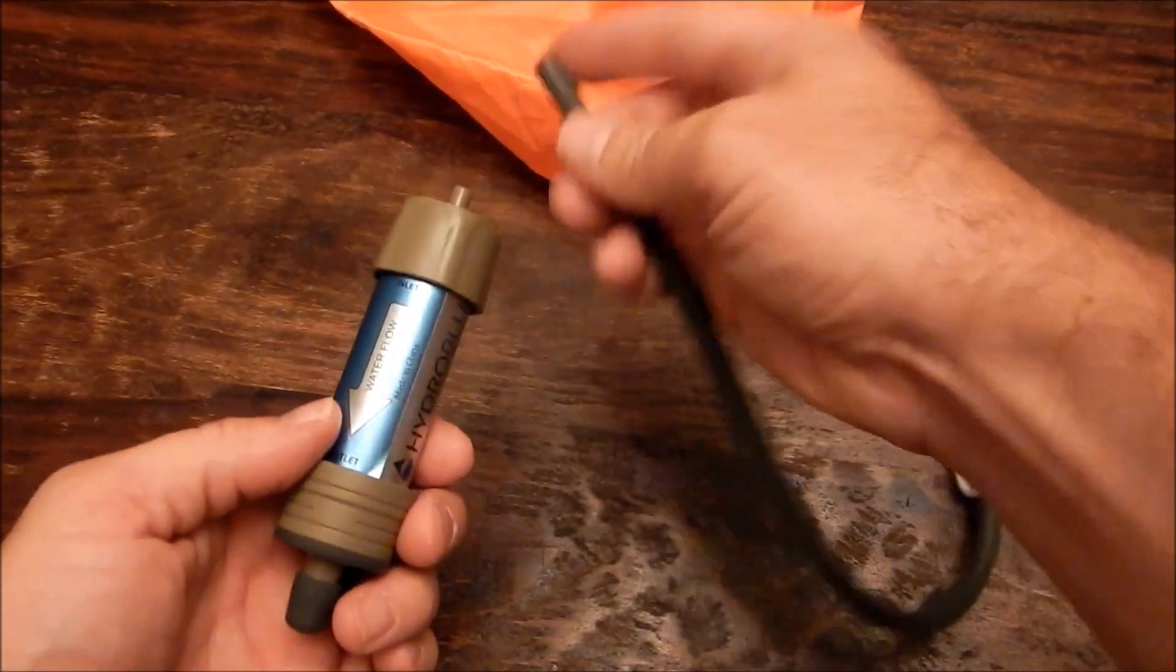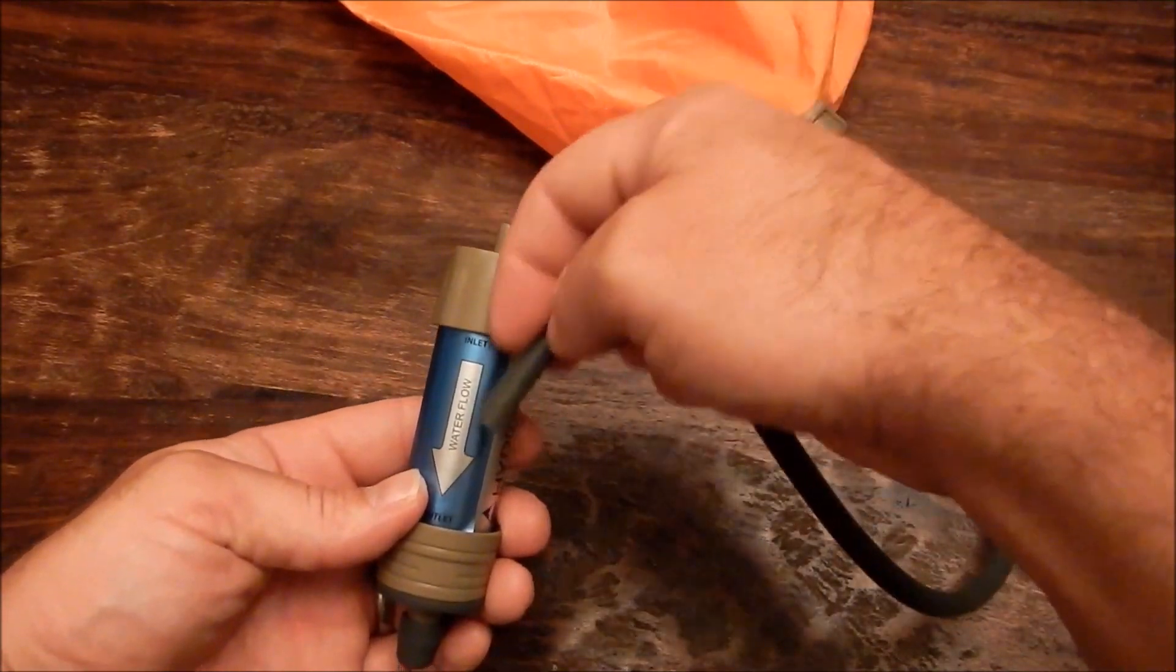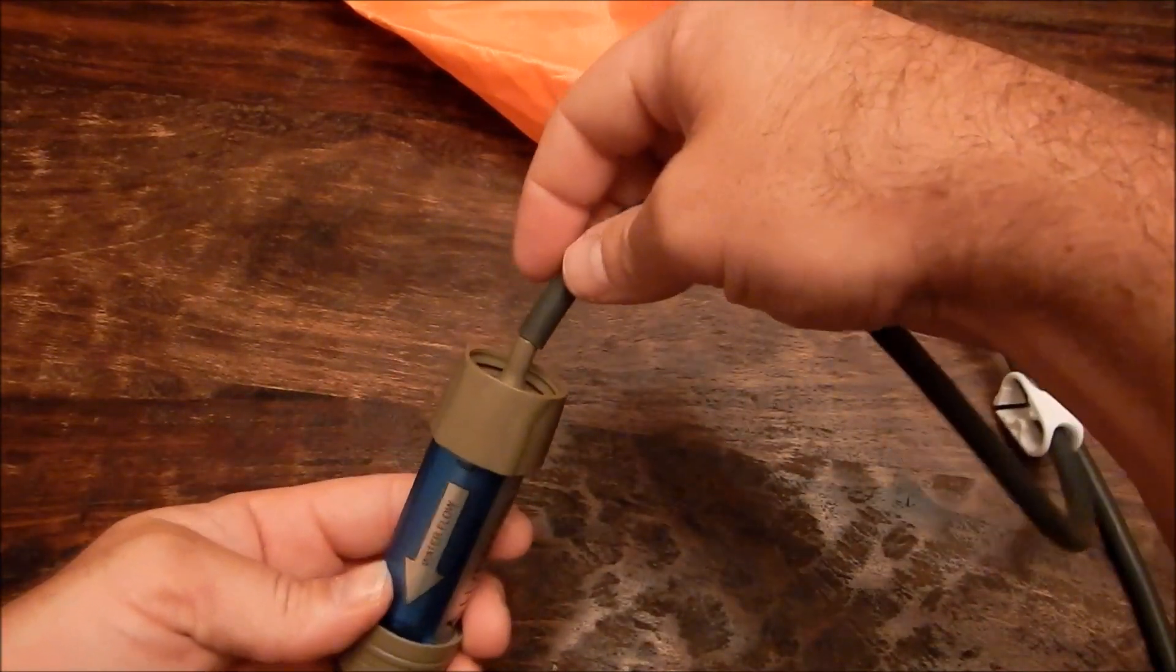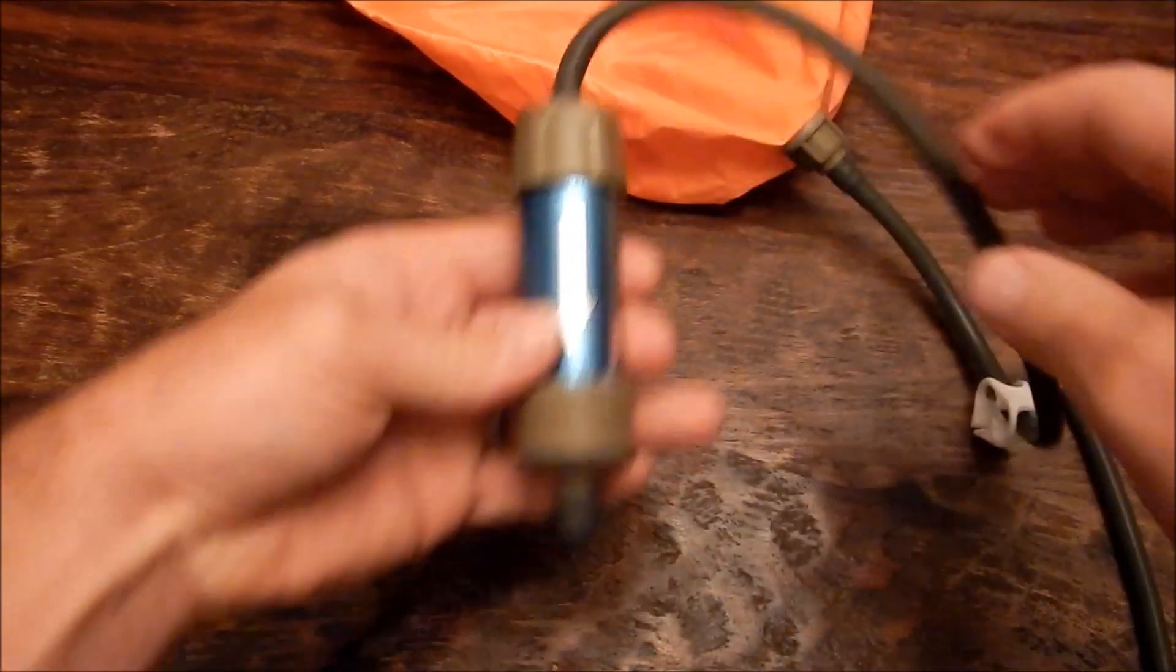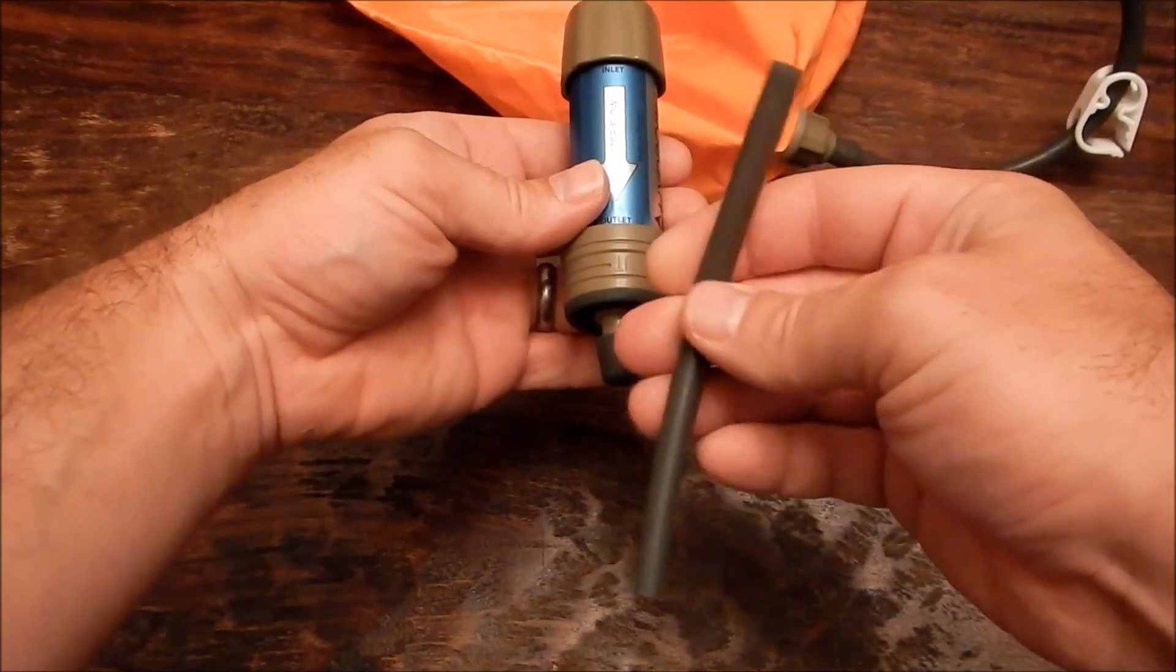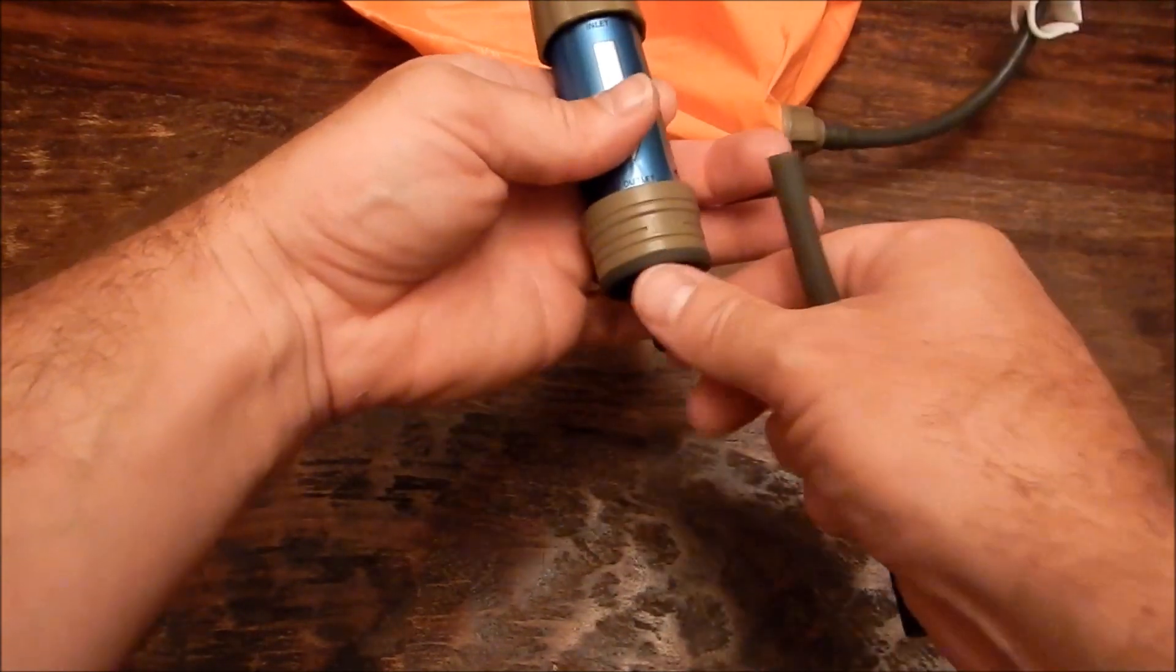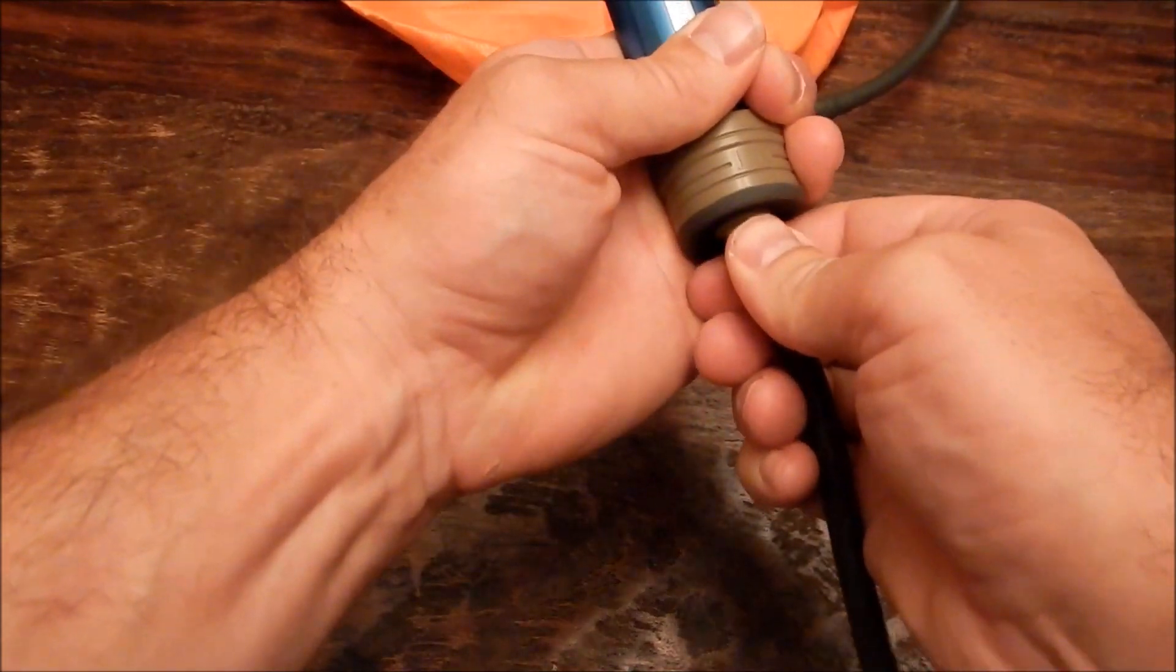You're going to connect this piece to the top of the filter so that the flow arrow is pointing away from the dry bag. And then you're going to take your little six inch piece and you're going to connect that here. And voila!